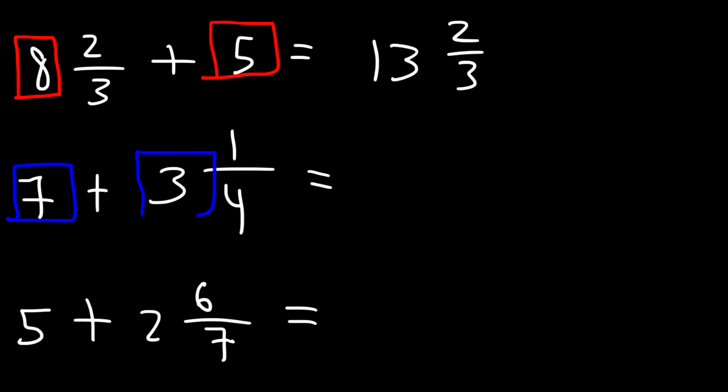For the next example, all we need to do is add 7 and 3. 7 plus 3 is 10, so it's going to be 10 and 1/4.